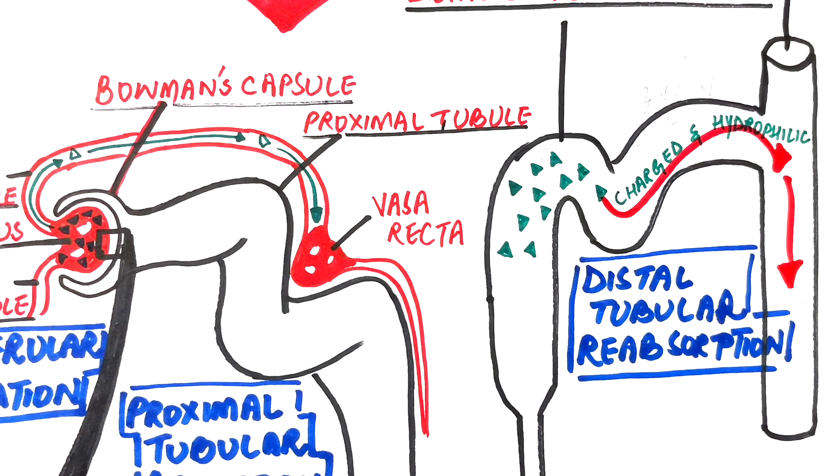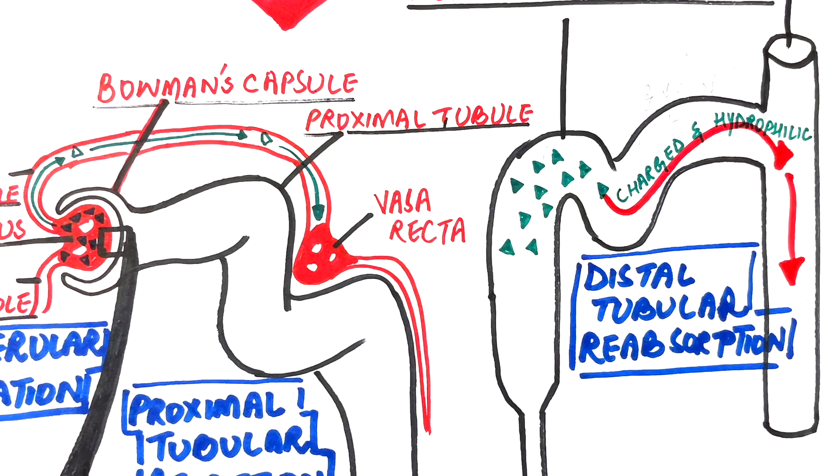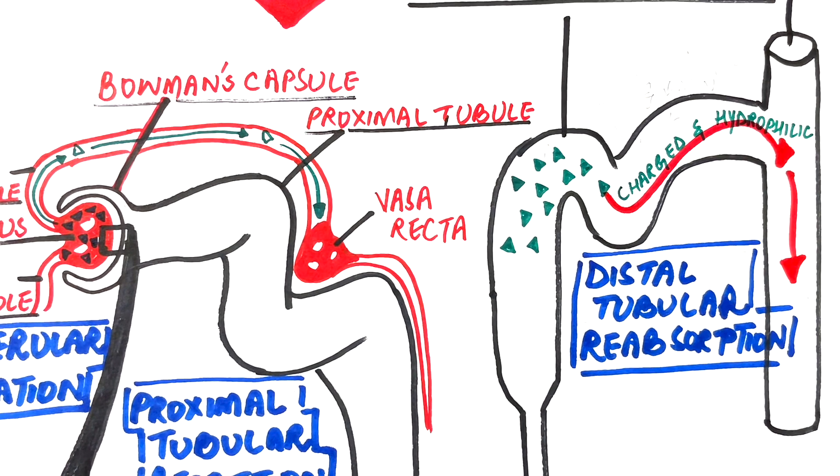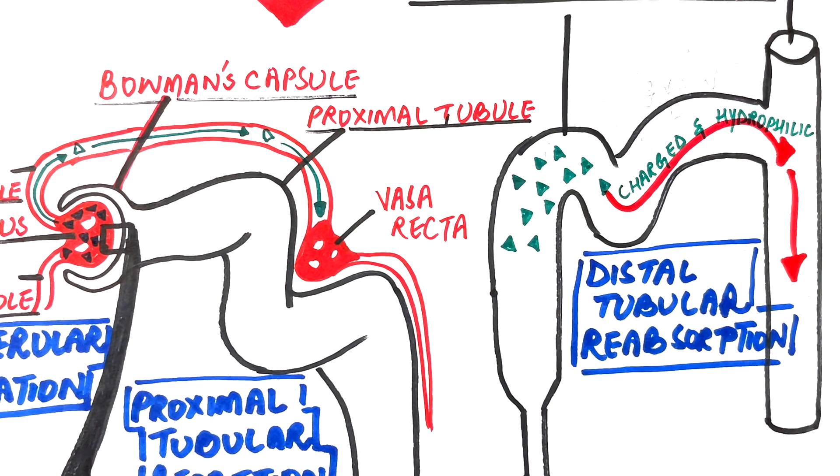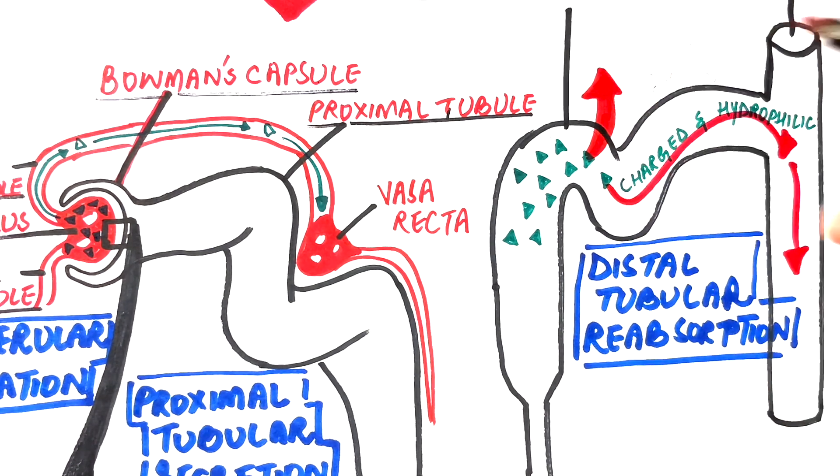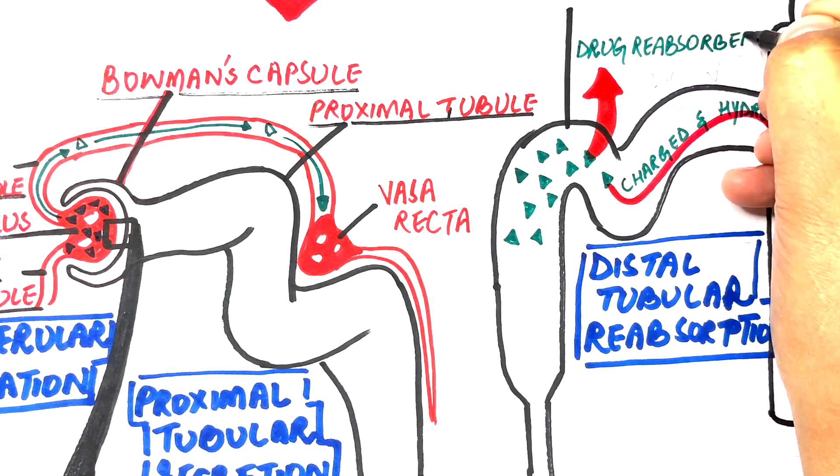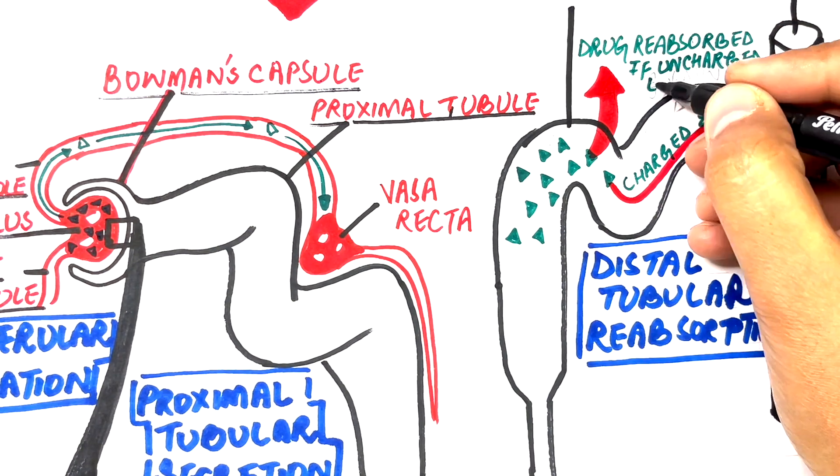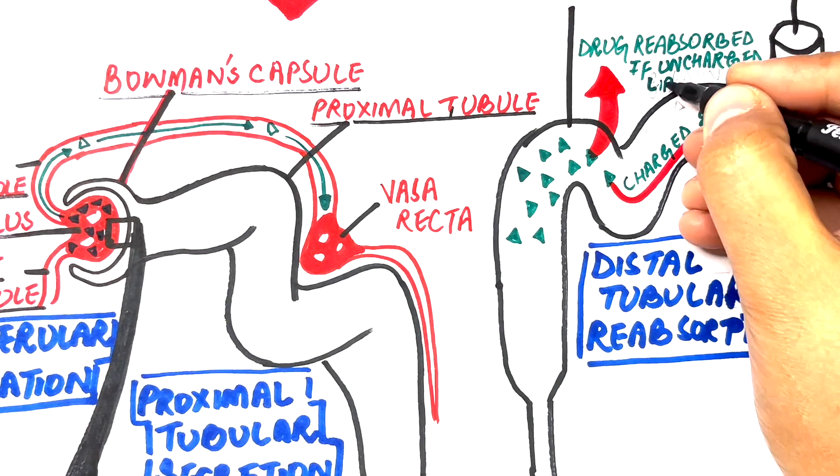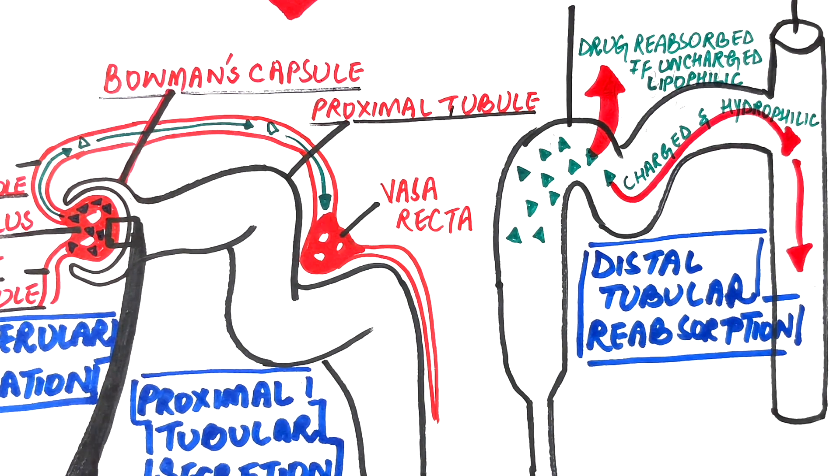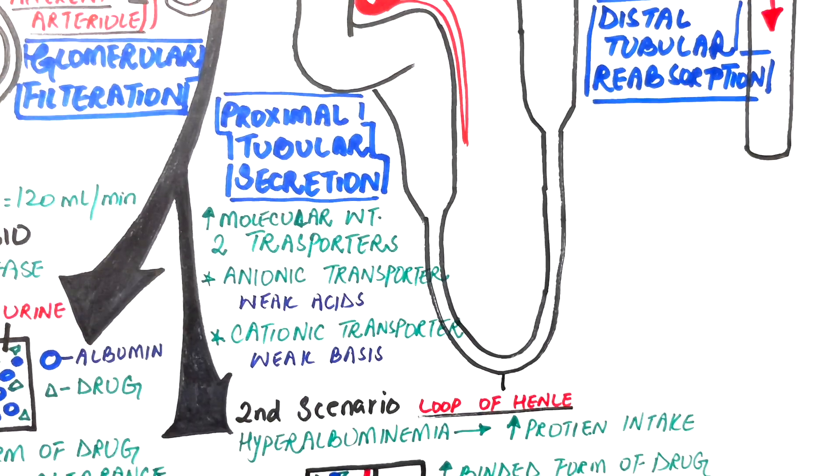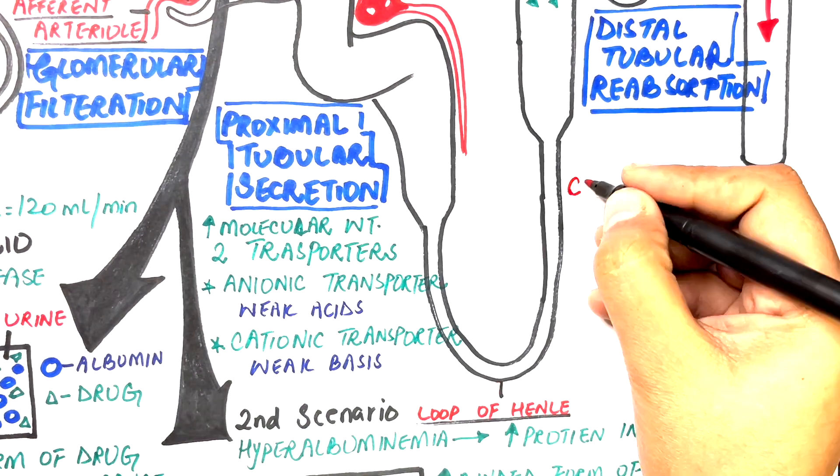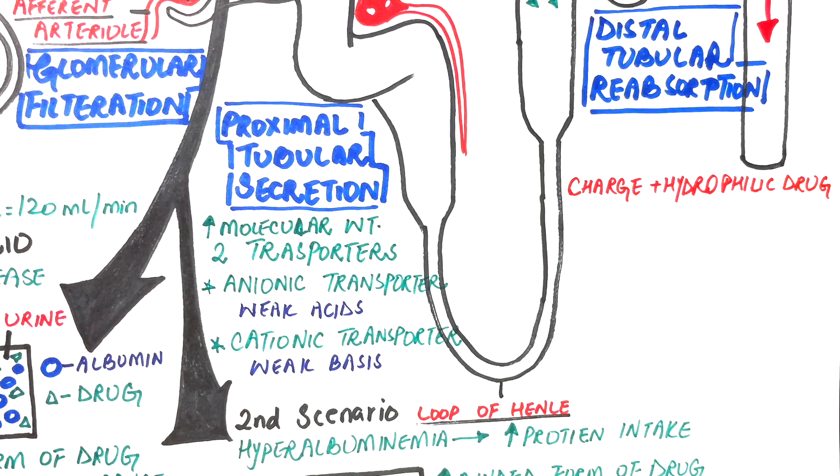However, if the drug is uncharged or non-polarized and lipophilic, and moreover it has a low molecular weight, it diffuses back into the circulation very easily and passively and is delivered to the liver for further processing, what we call phase 1 and phase 2 metabolism, in order to make the drug charged or ionized or hydrophilic enough for its excretion.